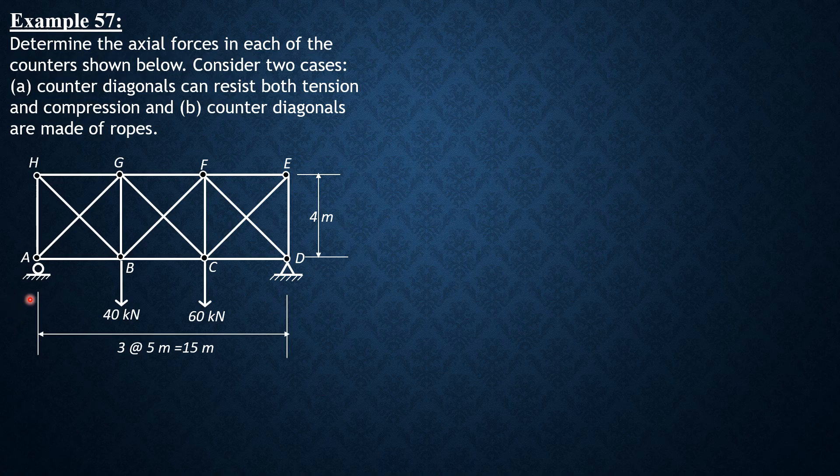So this is the figure. Summation of moments about D equals zero, so the vertical component at A times 15 equals 60 times 5 plus 40 times 10. You will get RA is 46.667 kN upward. Likewise, summation of moments about A equals zero. RDY times 15 equals 40 times 5 plus 60 times 10. You will get RDY equals 53.333 kN. RDX is zero, obviously there's no inclined load, so it is zero, not shown in the figure.